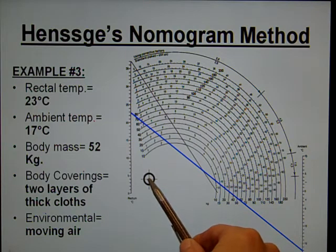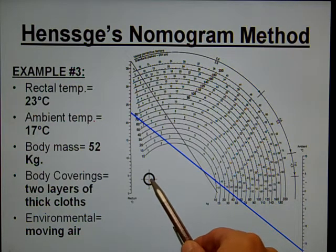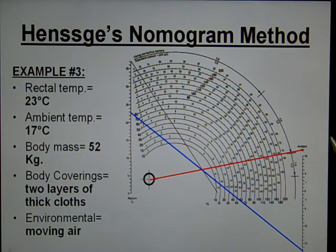So I'm going to start at the center of the target, work my way out with a red line, and extend it out past the last semicircle of the nomogram.